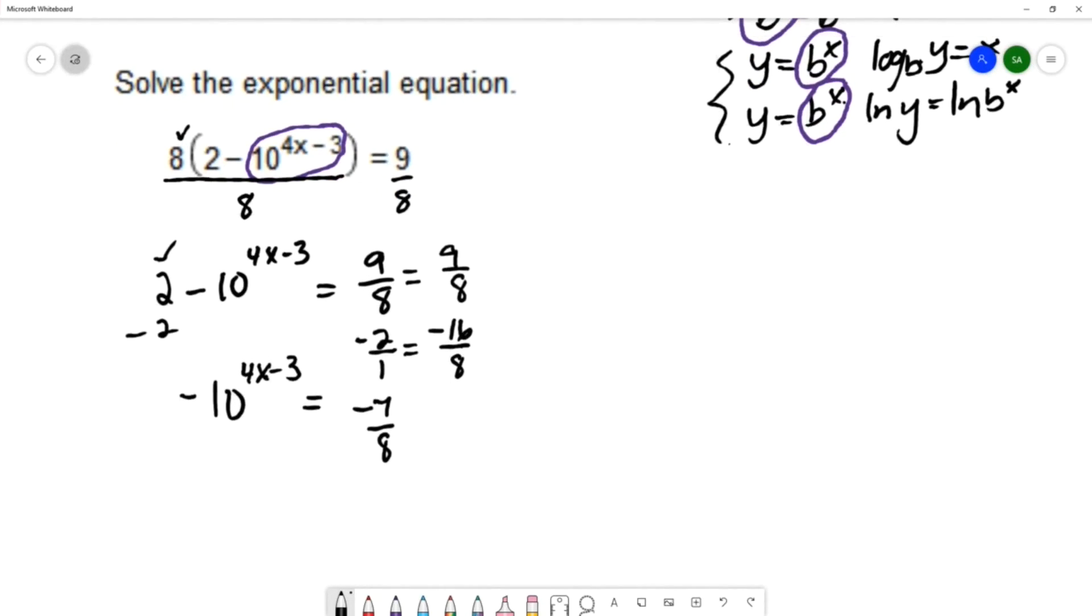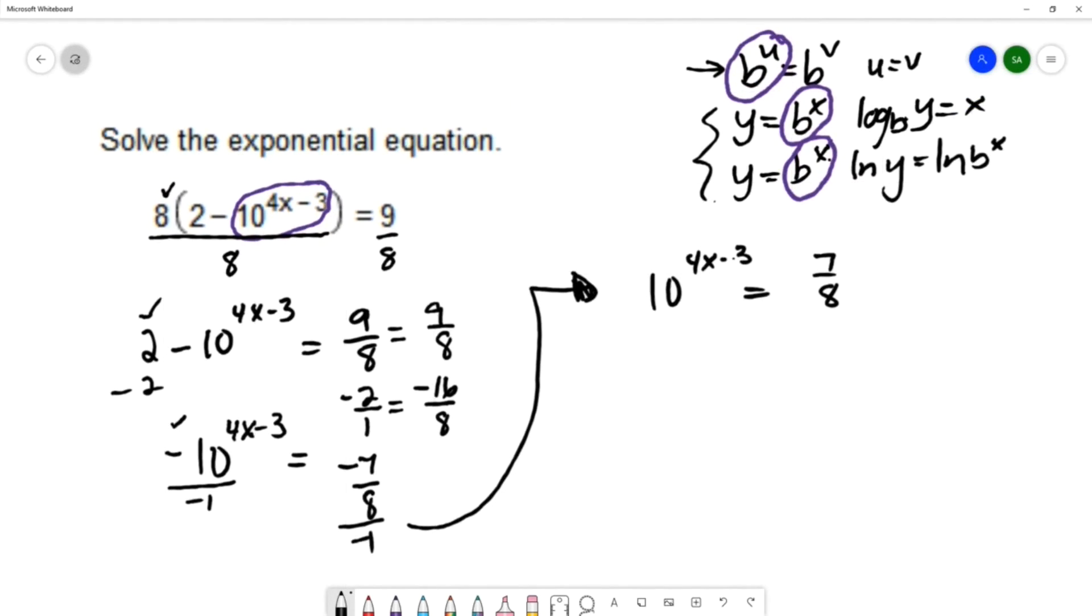I still need to isolate this exponential and get rid of that negative, so I'll divide by negative 1 on both sides. We have 10 to the 4x minus 3 equals positive 7 eighths. We have isolated the exponential on one side, and now we can start to think of these strategies.